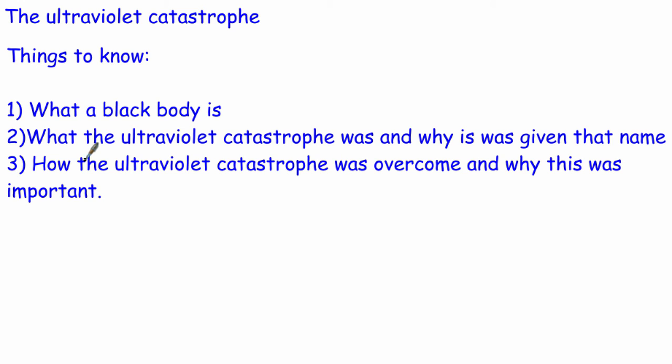These are the three main things that we need to know about the ultraviolet catastrophe. The ultraviolet catastrophe concerned things called black bodies and black body radiation. We need to know what a black body and what black body radiation is, what the ultraviolet catastrophe was and why it was given this particular name, and how the ultraviolet catastrophe was solved and why this was particularly important.